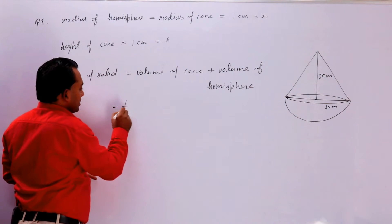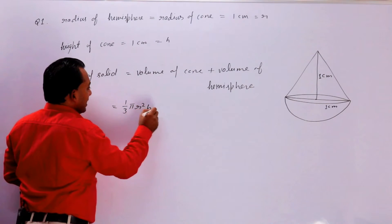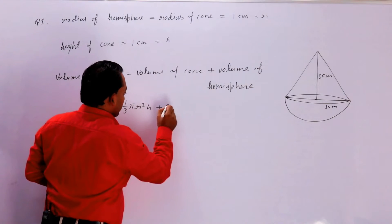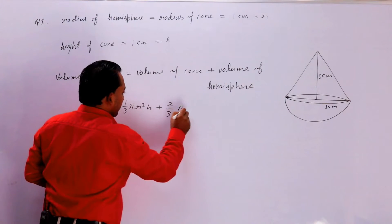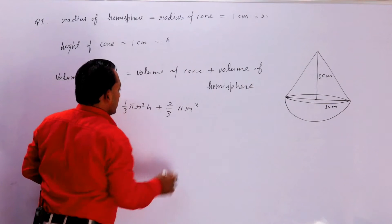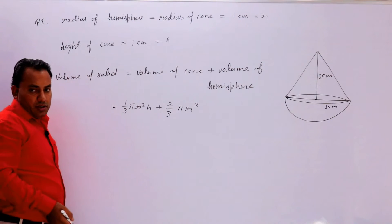बच्चो, volume of cone is 1 upon 3 πr²h. और ये बच्चो, हो जाएगा 2 upon 3 πr³.